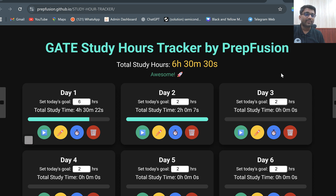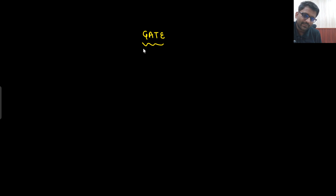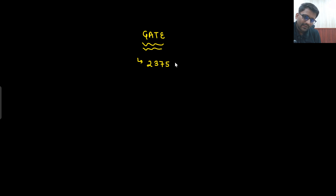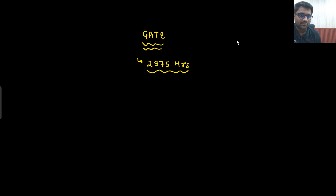For those preparing for Gate 2027, ideally how much time should one study? Specifically for EC, Electrical, and Instrumentation students, the number is 2375 hours — that is what the Gate examination requires in terms of effort. The same would mostly apply to CSE as well. I am not sure about Mechanical or Civil, but CSE, Electrical, EC, and Instrumentation would require this much effort if you want to prepare strictly from zero.